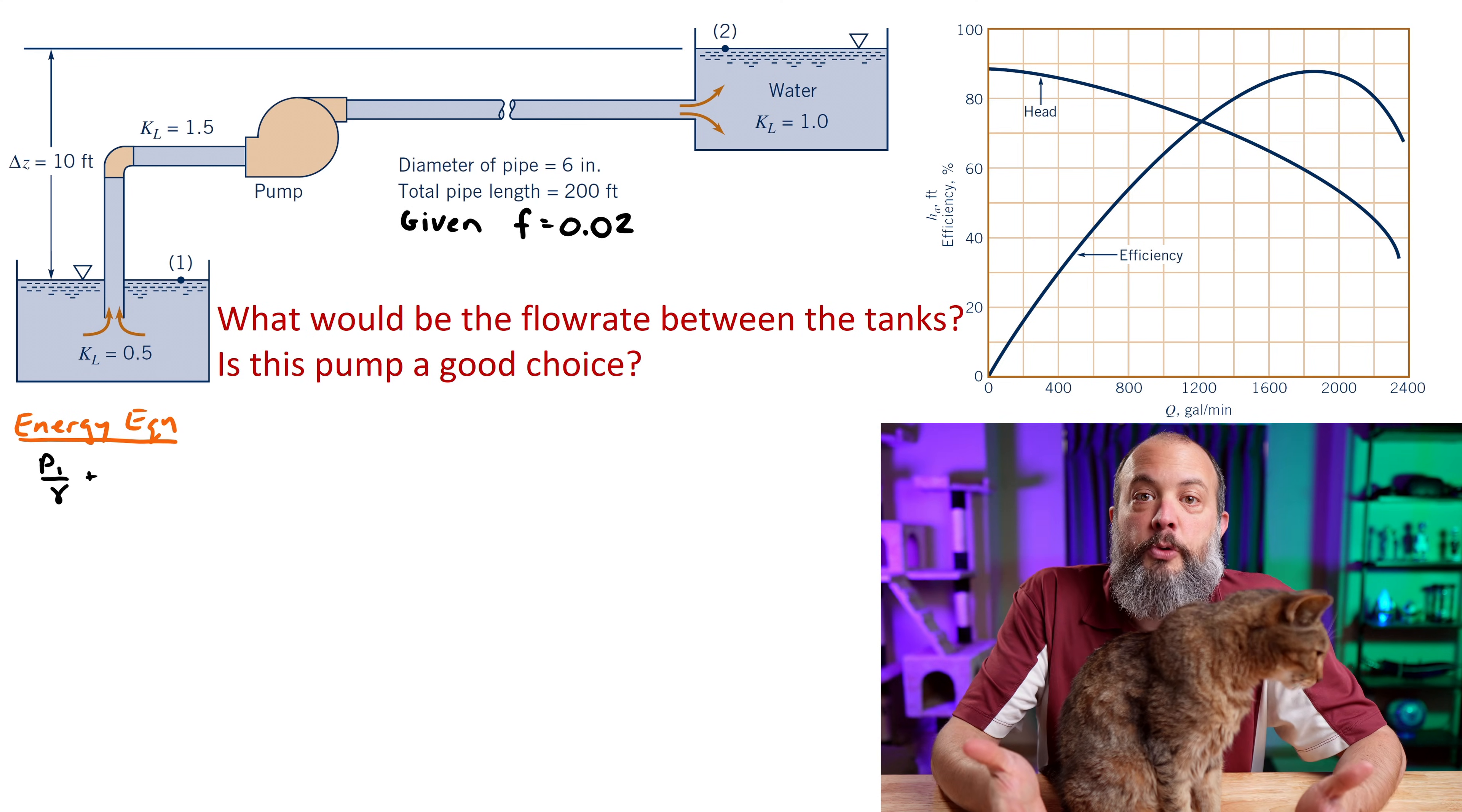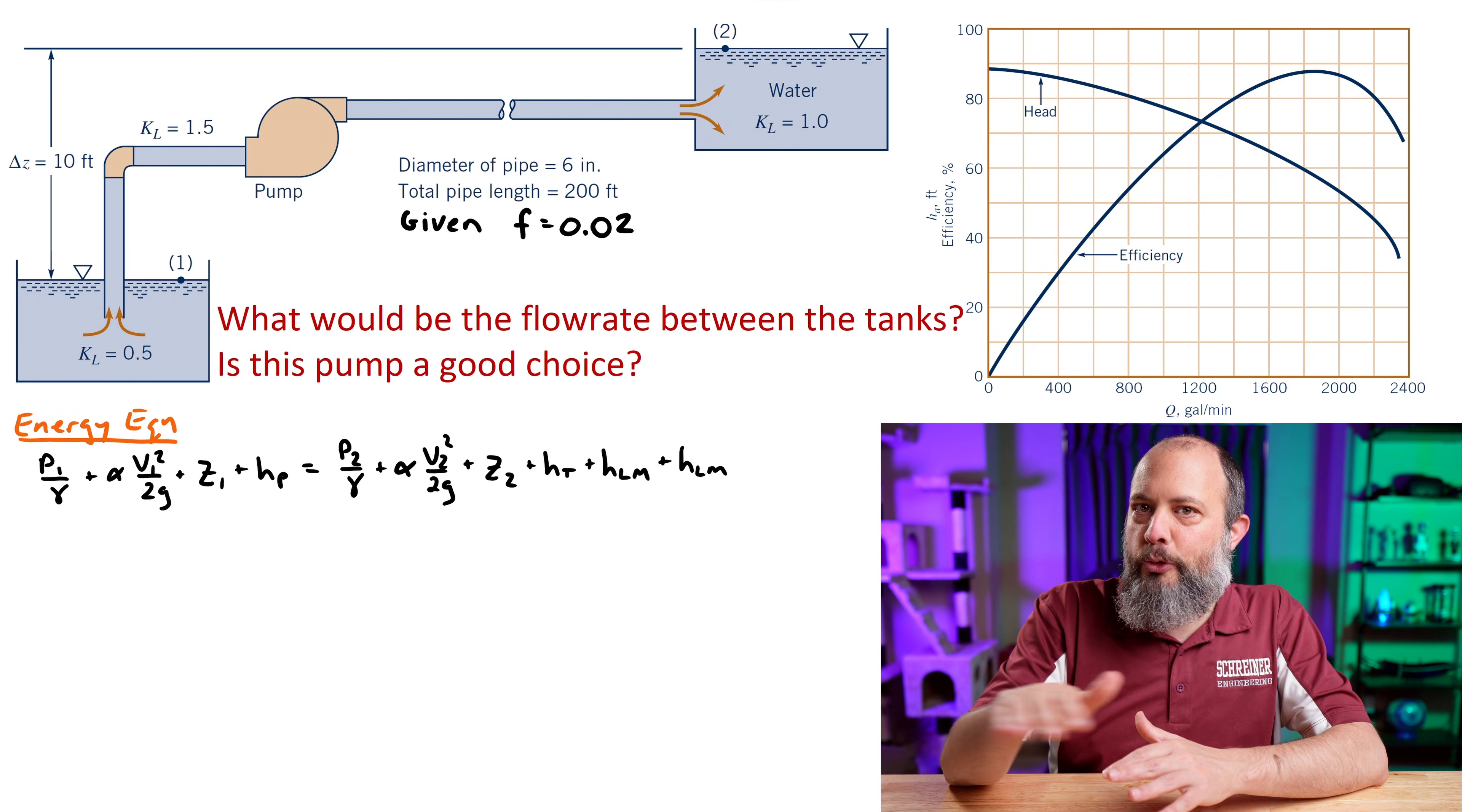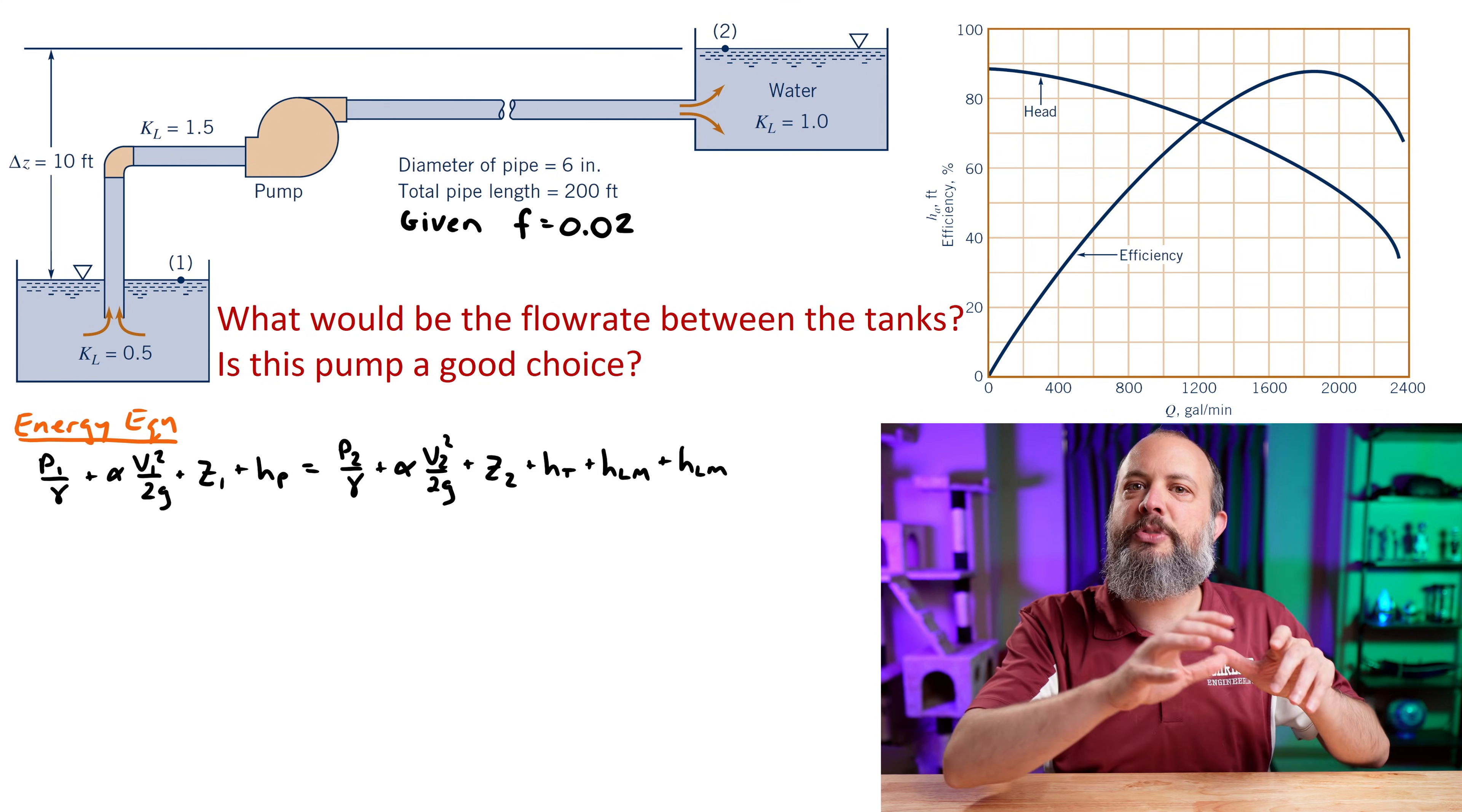System curve starts with the energy equation. Start with point 1 at the top of the left tank and point 2 at the top of the right tank, and just write out the energy equation, which is essentially the Bernoulli equation, with extra terms, head loss and energy added by the pump. And look at your axis. You've got flow rate on the horizontal axis, and you've got pump head on the vertical axis. That means you want to rearrange this energy equation so you get pump head by itself on the left side of the equation.